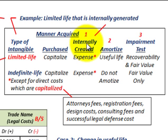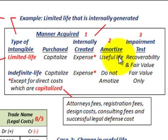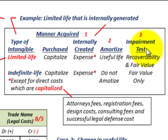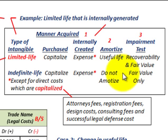We're going to be looking at an internally generated intangible with limited life, and we'll also look at amortizing it over the useful life. If it has an indefinite life, we do not amortize it. For impairment testing on a limited life intangible, you perform a recoverability test and a fair value test. For an indefinite life intangible, you use fair value testing only.